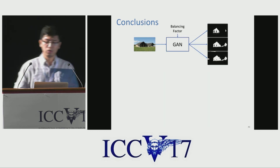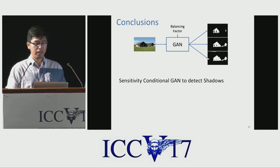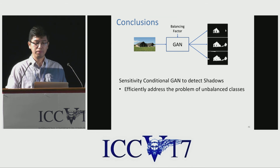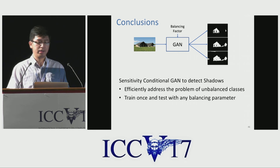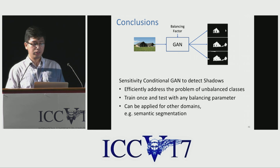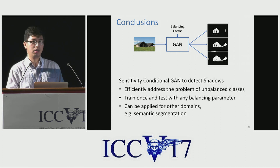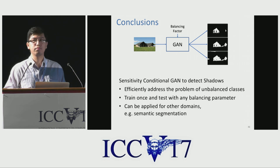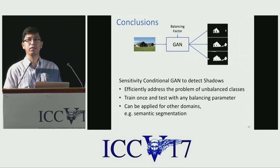To conclude, we have proposed an SCGAN model to detect shadows. Our method is able to address the problem of unbalanced training sets efficiently, in which we just need to train once and we will be able to test with any balancing parameter during testing time. The proposed method can be applied not only for shadow detection, but also on other tasks like semantic segmentation, where the imbalanced class problem also exists.